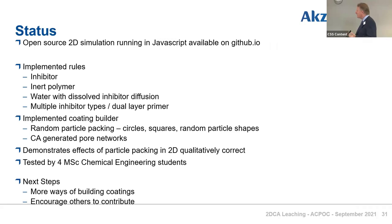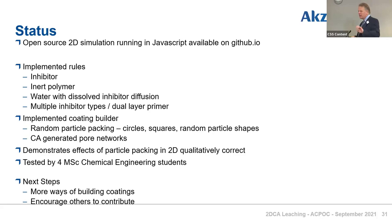The source code is available open source. I've implemented rules around inhibitors, around the inert polymer itself, and water with a dissolved inhibitor in it has to diffuse, otherwise the system will never get the inhibitor out to protect anything. We're able to have multiple inhibitors and dual layers, so we can simulate a stratified coating or a top coat with something happening in it and a primer coating.